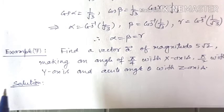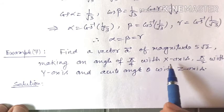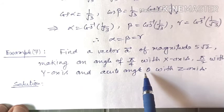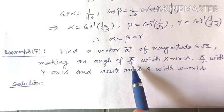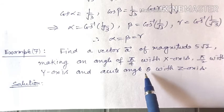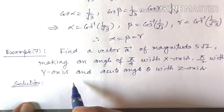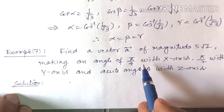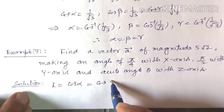Now example 7: find a vector a of magnitude 5√2 making an angle of pi/4 with the x-axis, pi/2 with the y-axis, and acute angle theta with the z-axis. We need to find a vector a whose magnitude is 5√2, making angle pi/4 with x-axis, pi/2 with y-axis, and acute angle theta with z-axis. The direction cosine l equals cos alpha equals cos(pi/4) equals 1/√2.